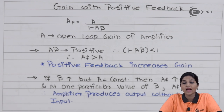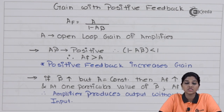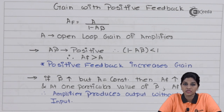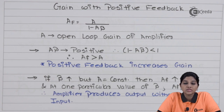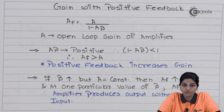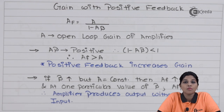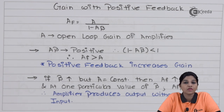In summary, an oscillator is an amplifier circuit that uses positive feedback to produce output oscillations without any external AC input signal, requiring only a DC power supply. Positive feedback is when the input signal and the feedback signal are in phase with each other — also called regenerative feedback. So this is the concept of oscillators and positive feedback. I hope you understand this topic.